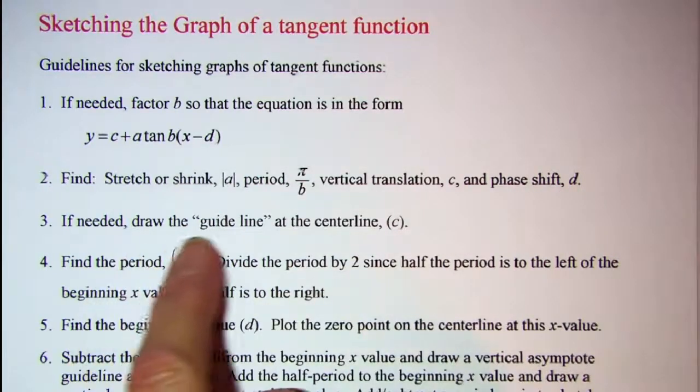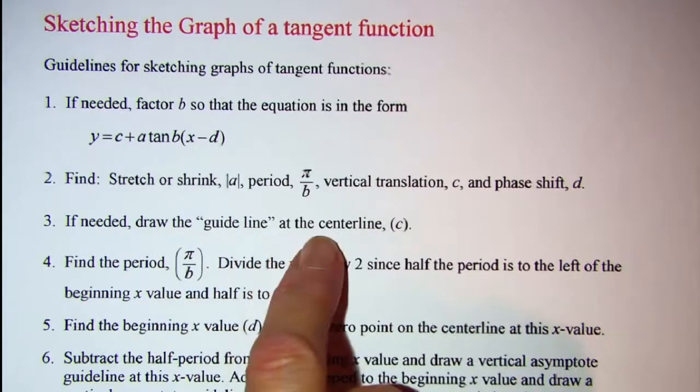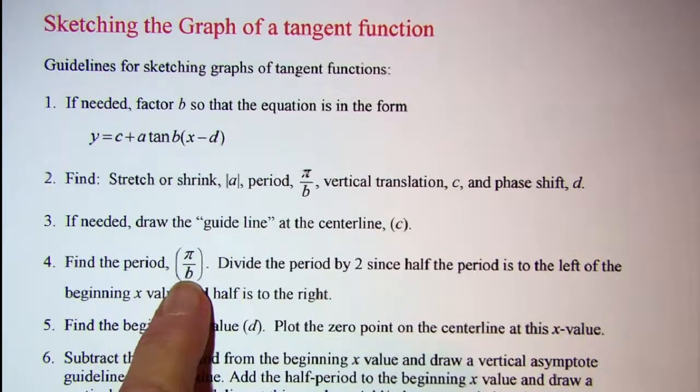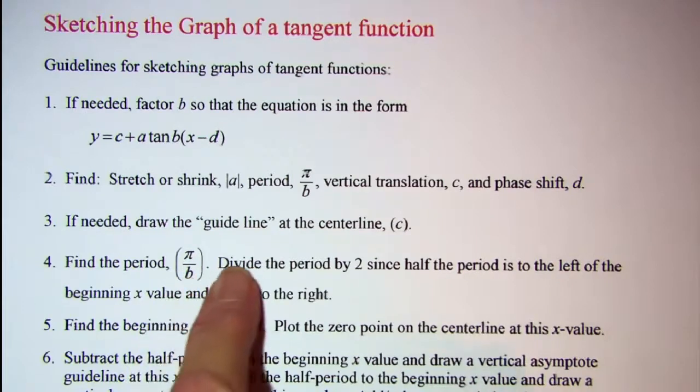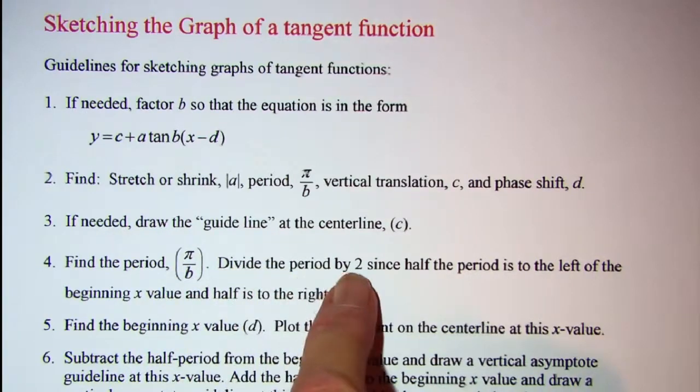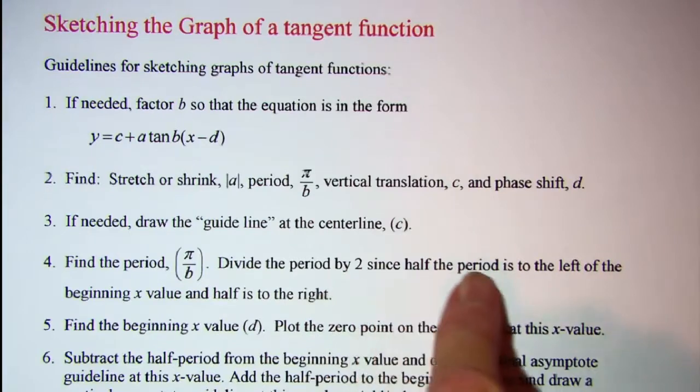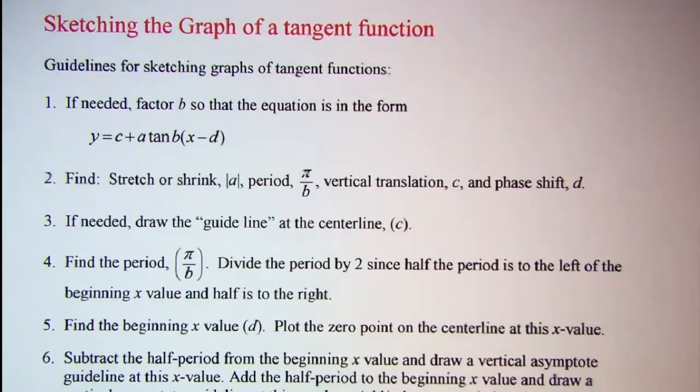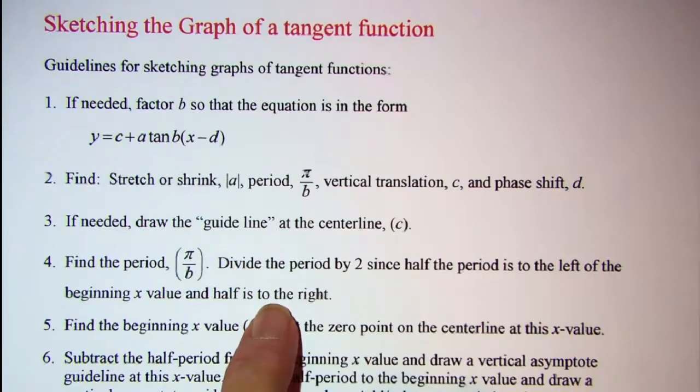If needed, draw a guideline at your center line. Find the period using the formula π over B and then divide that period by 2 since half the period is to the left of the beginning x value and half is to the right. So for the tangent function you need to divide your period by 2.